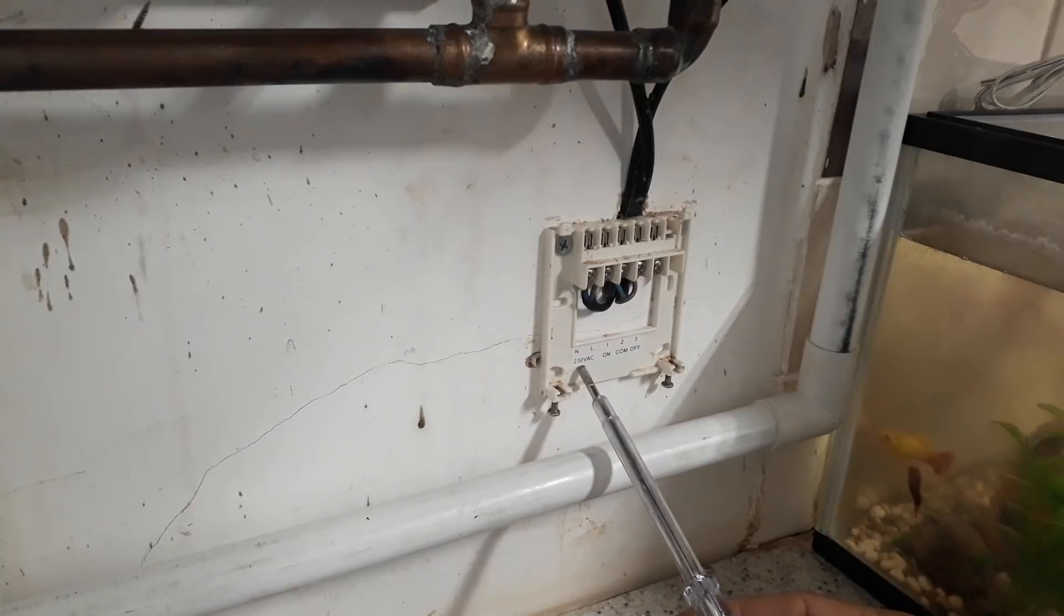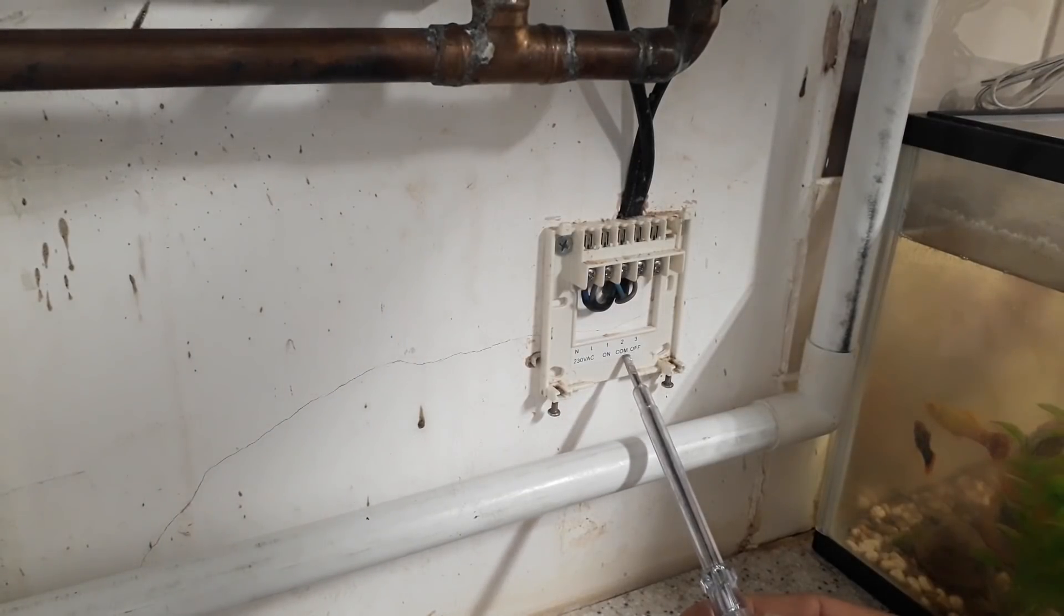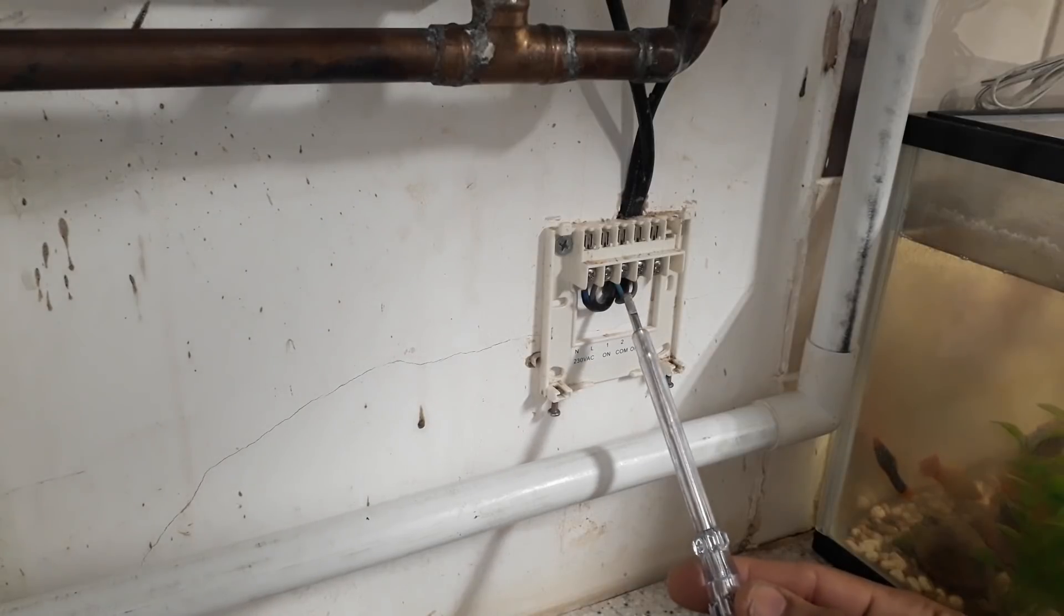So we got an input voltage there, and we've got on and off and a common. We're only using the on and common, and we're using the voltage. So we're going to get our power in from here, and this is our on and off right here for our heating.